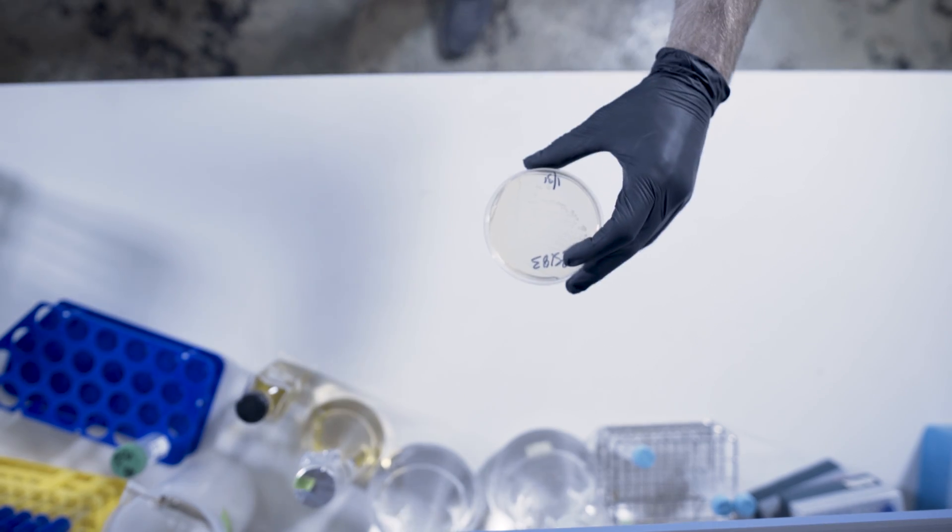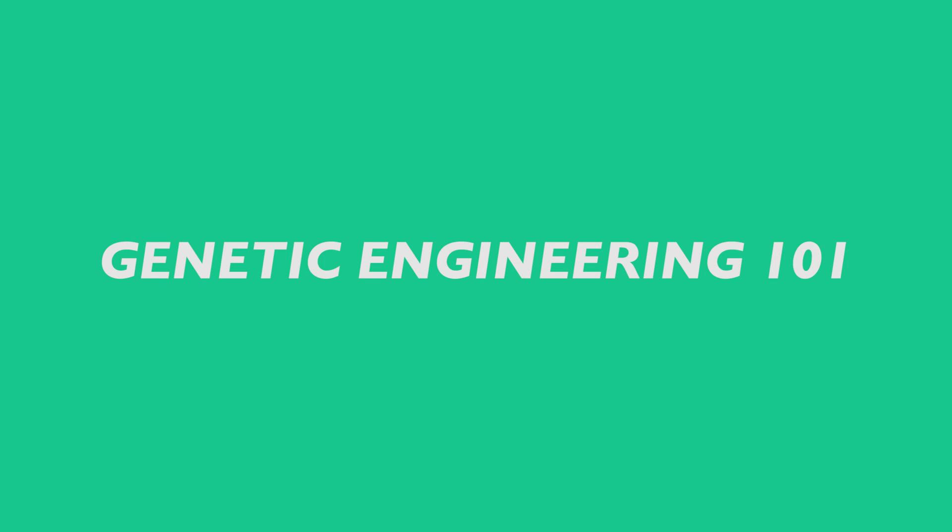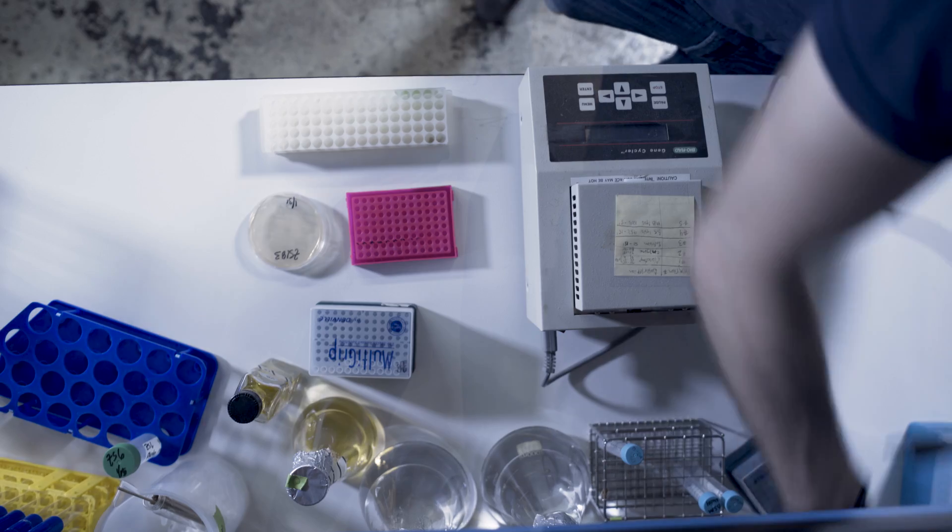We're going to take regular bacteria and edit its DNA to make it glow green. This is a simple example of genetic engineering, but the principle is the same when you're trying to make something more complicated.